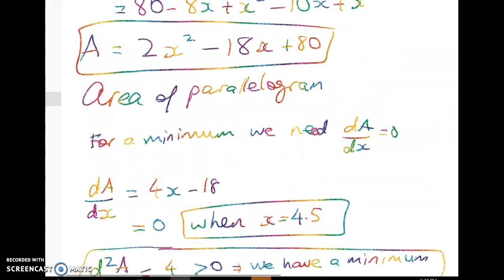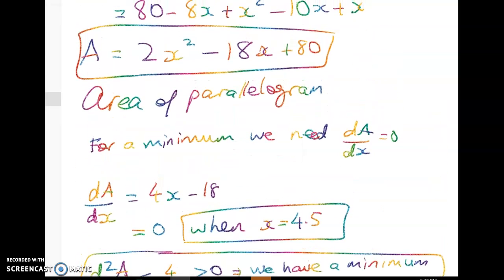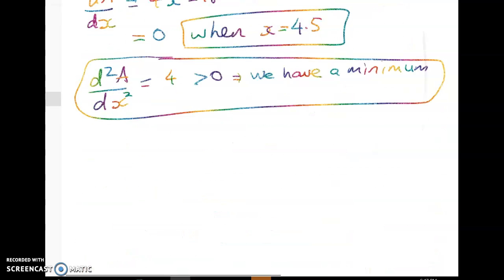The other way that we could do it is to say that the area of the parallelogram is a quadratic. So it has this shape and you can see that the only turning point in there is a minimum. So that's method two.